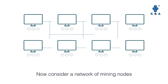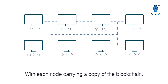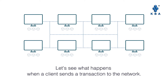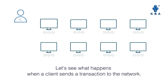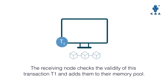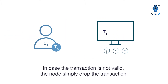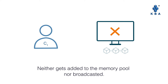Now consider a network of mining nodes, with each node carrying a copy of the blockchain. Let us see what happens when a client sends a transaction to the network. Imagine client C1 sending a transaction T1 to a network node. The receiving node checks the validity of this transaction T1 and adds it to their memory pool. In case the transaction is not valid, the node simply drops it — it neither gets added to the memory pool nor broadcasted.